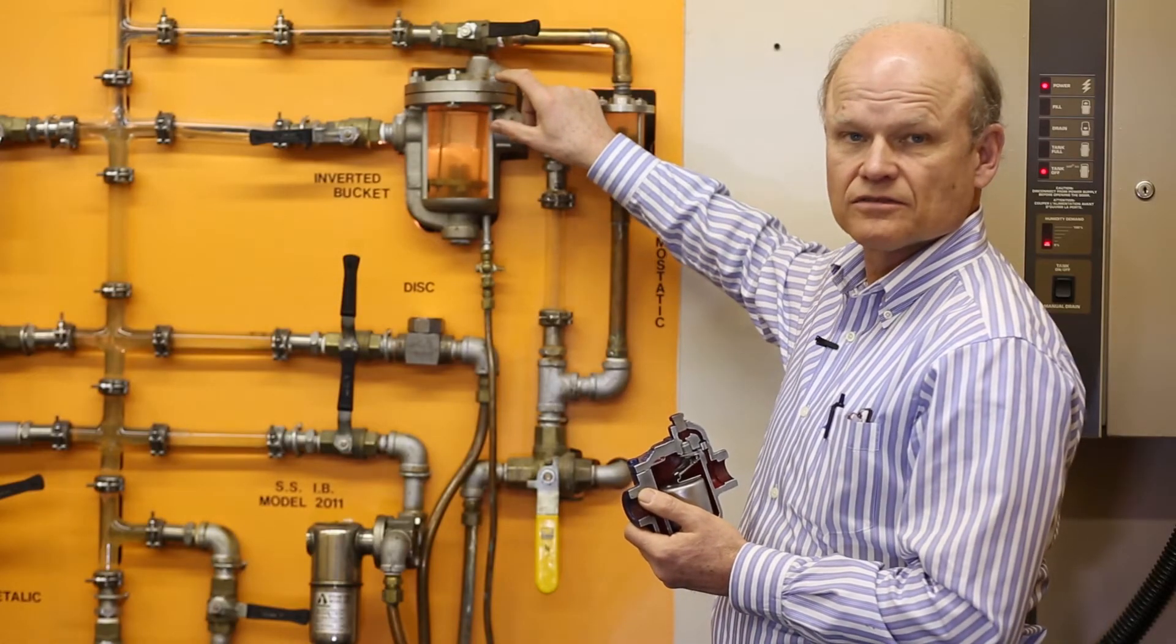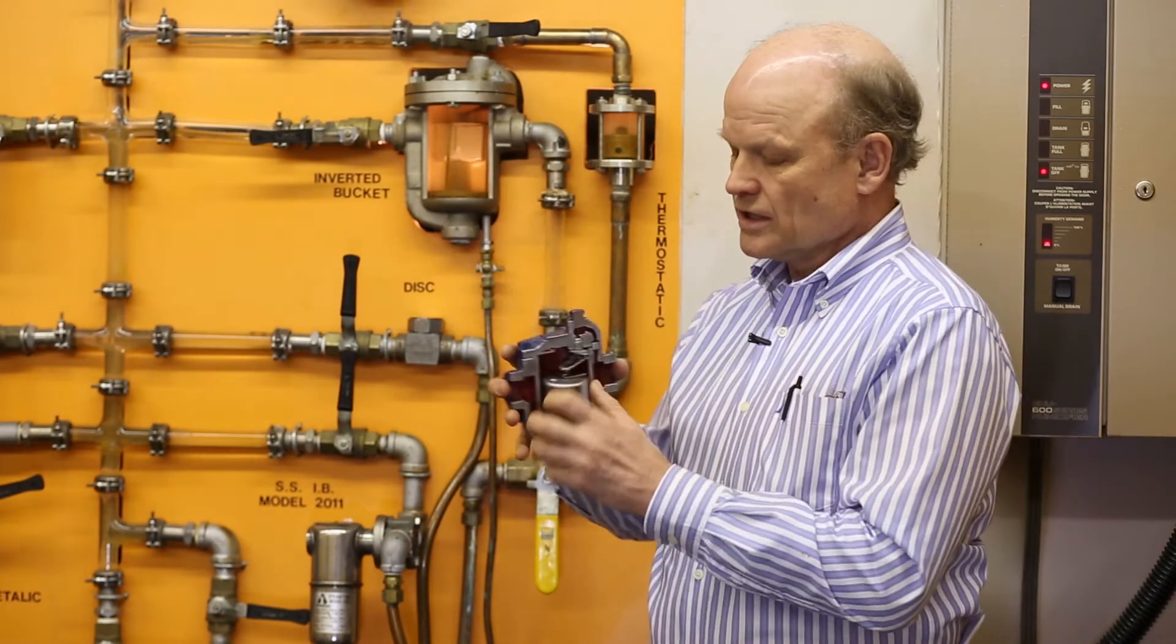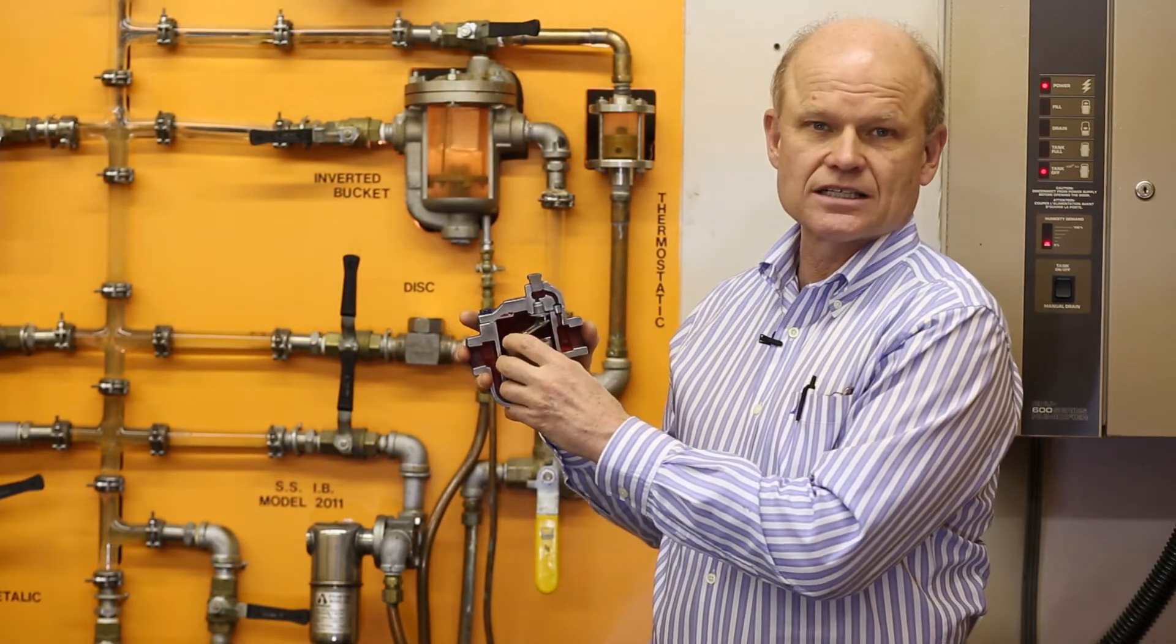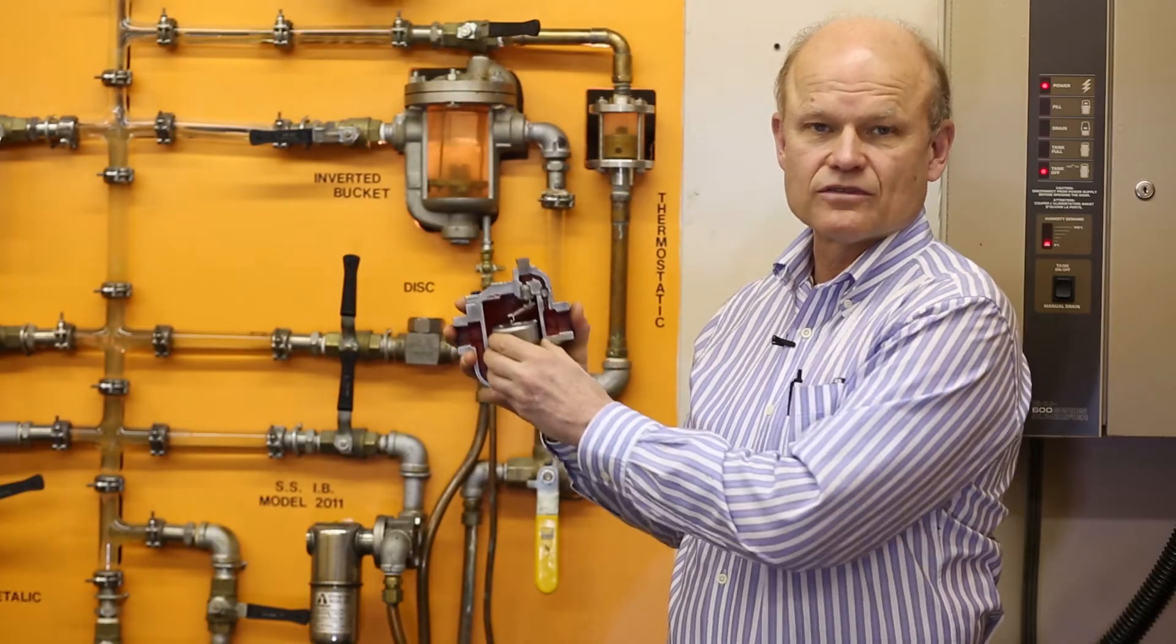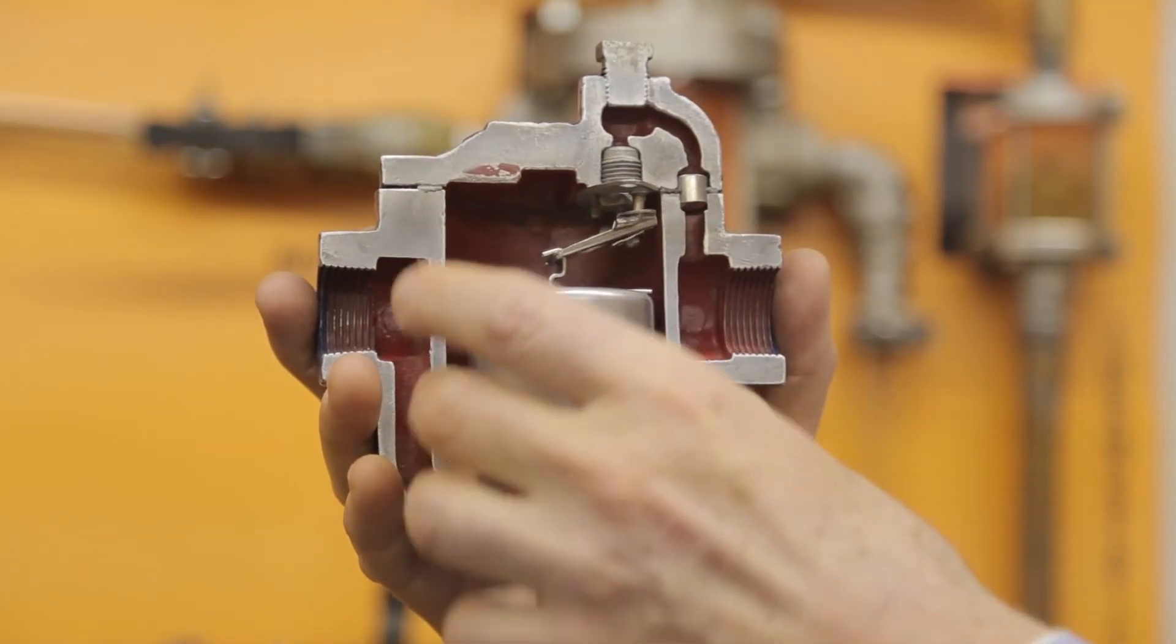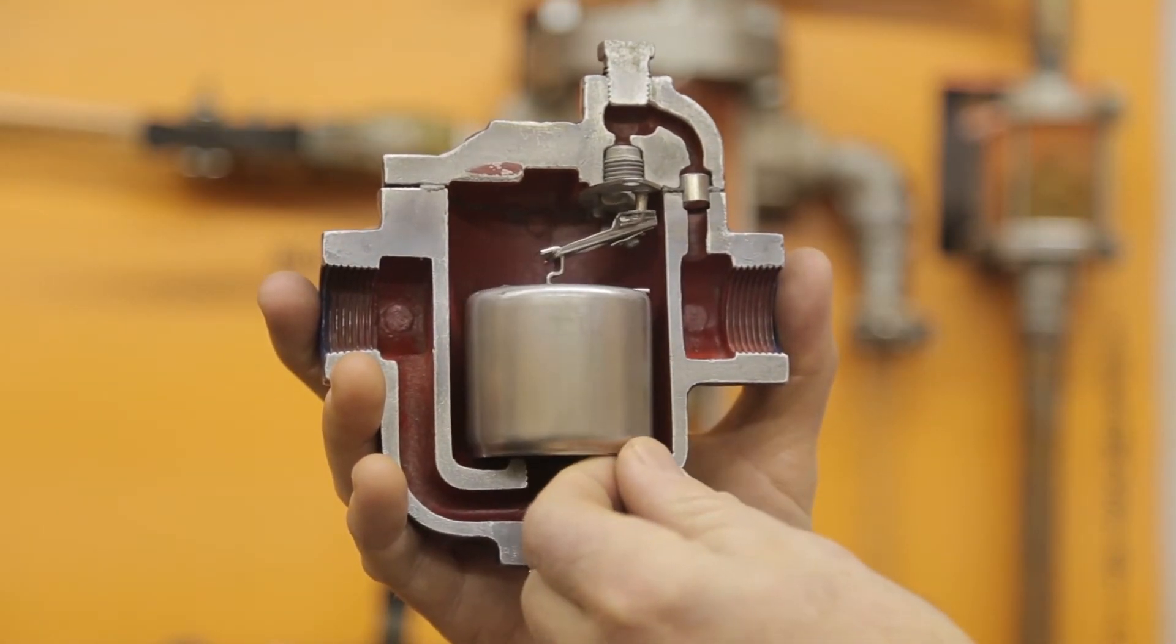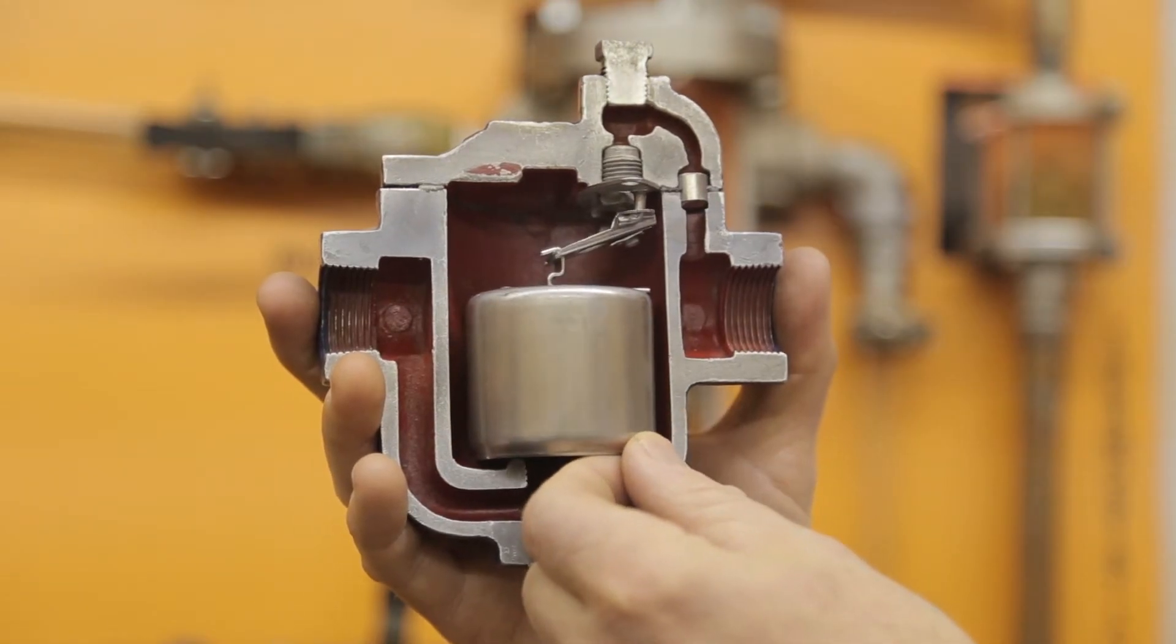There's also a small hole in the top of the bucket that allows for non-condensable gas and air to be vented out of this trap. So there are two components: the bucket removing the condensate and the bucket vent allowing for air and non-condensable gas to be vented.